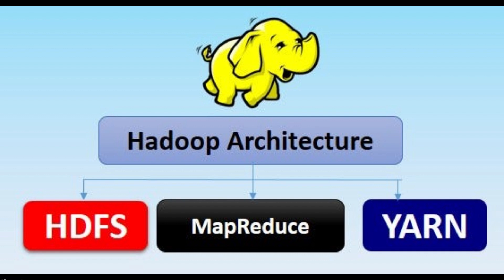The core of Hadoop consists of a storage unit known as the Hadoop Distributed File System — remember that, that's called HDFS — and it is the base, that's where the storage is happening. Then the processing part, which is called the MapReduce programming model. So two things: HDFS and MapReduce.